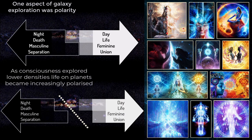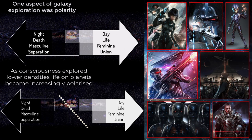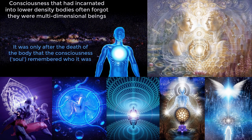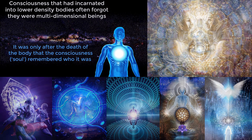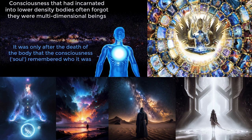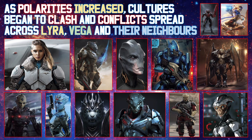One aspect of galaxy exploration was polarity — night and day, death, life, masculine, feminine, separation, union. Polarities were more extreme at lower densities, and as consciousness explored lower densities, life on planets became increasingly polarized. Consciousness that had incarnated into lower densities often forgot they were multidimensional beings. It was only after the death of the body that consciousness or soul remembered who it was. Lifetimes were generally shorter on lower third-density planets. As polarities increased, cultures began to clash and conflict spread across Lyra, Vega and their neighbors.